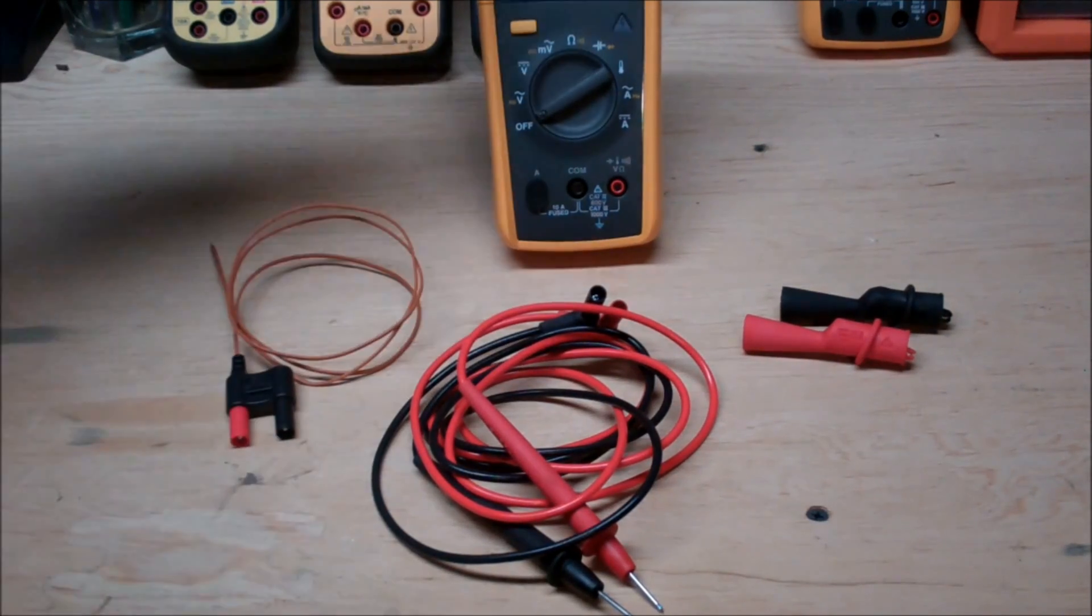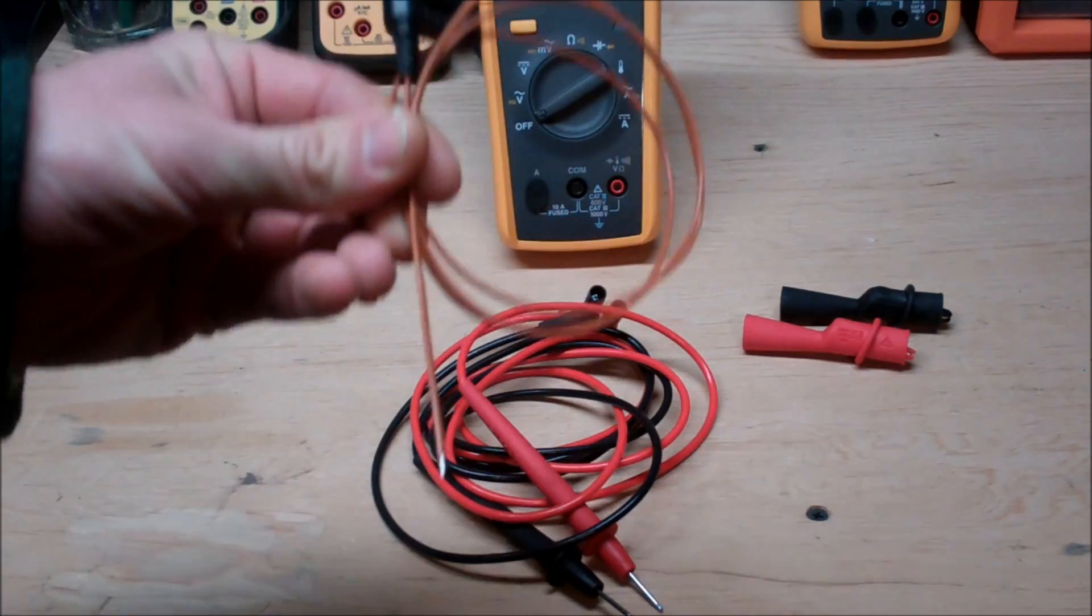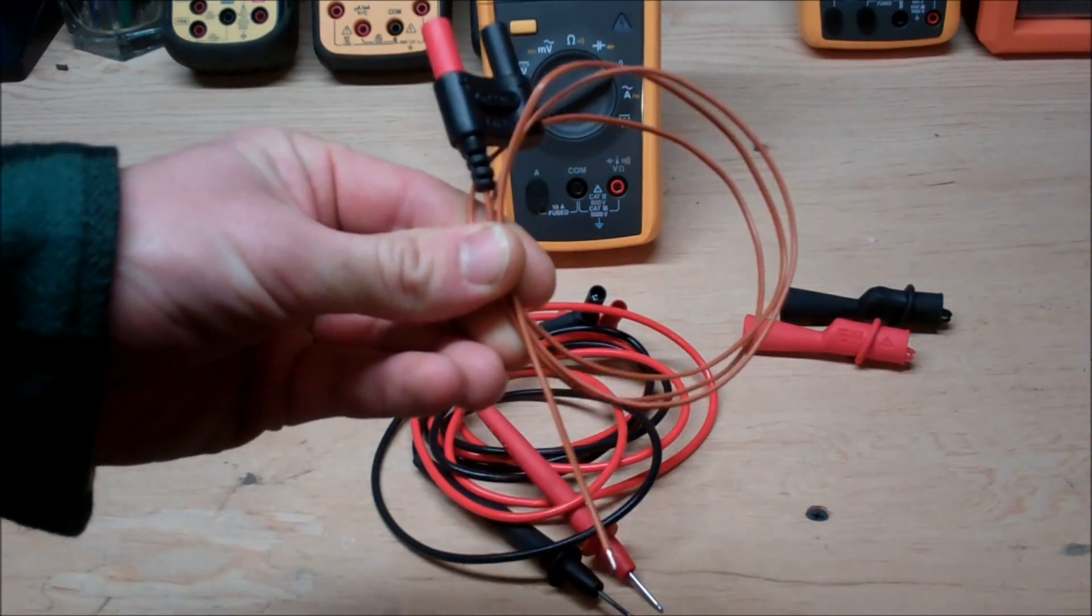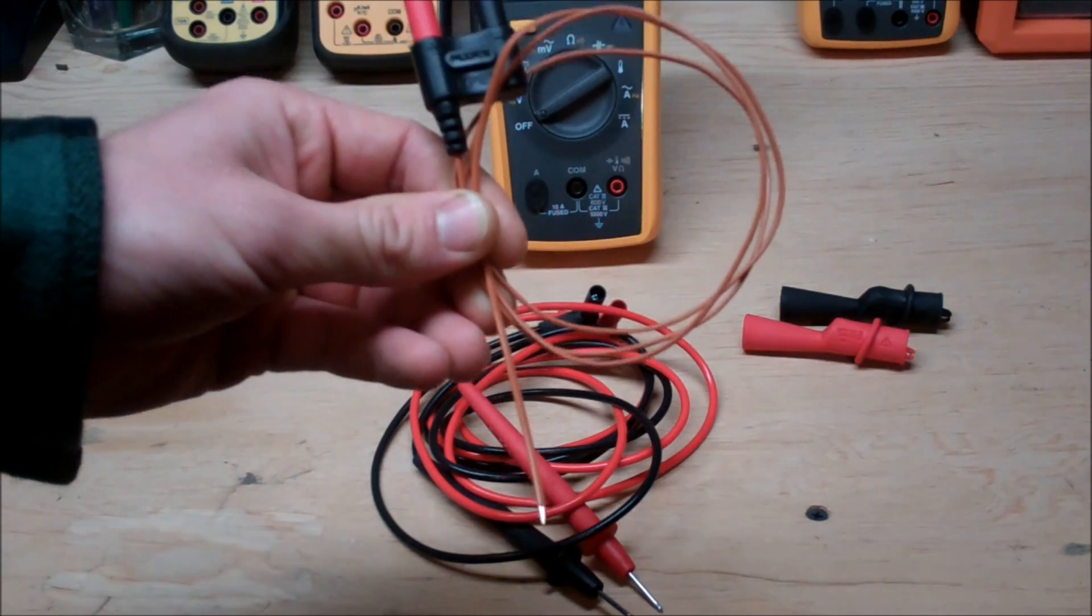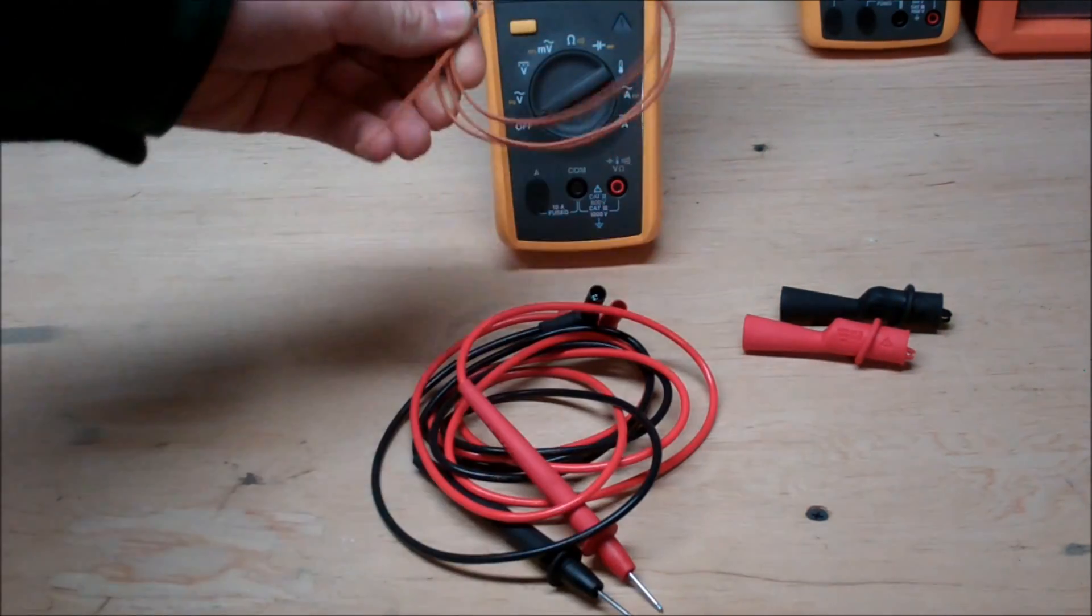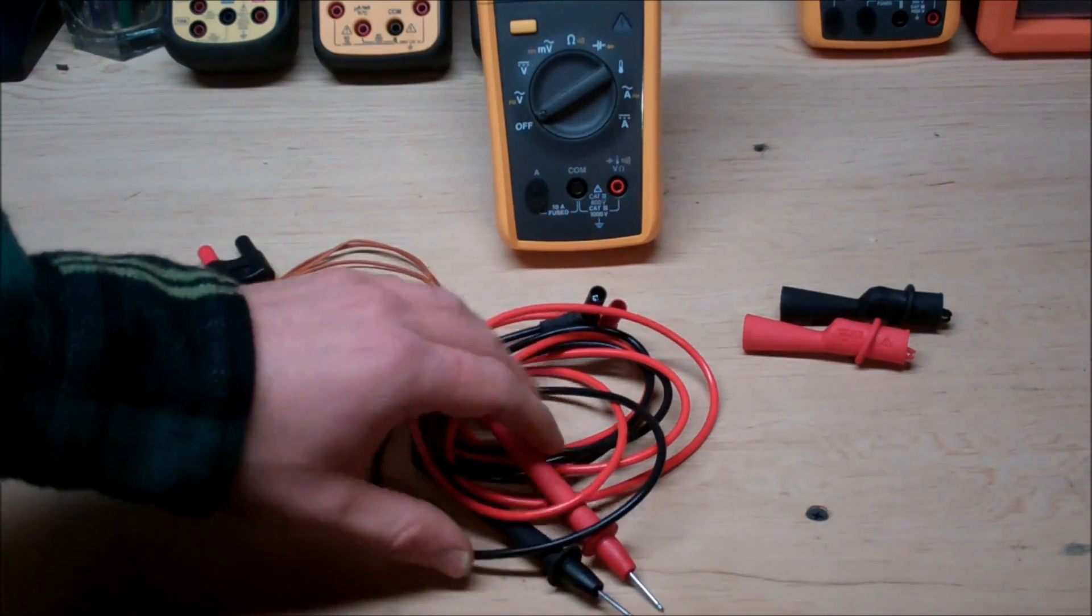So what accessories actually come with the Fluke 233? Well first off you've got your thermocouple and this is an awesome little device. This is going to help you troubleshoot mechanical stuff like overheating bearings, overheating anything and it's just really nice to actually have the ability to look at things. With the combination of the min-max features on the actual Fluke 233 it gives you a really diverse outlook on how to troubleshoot things.